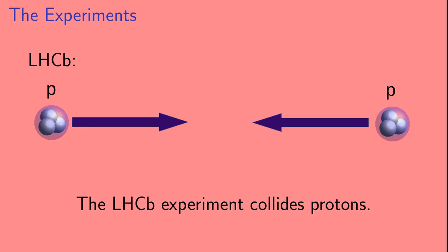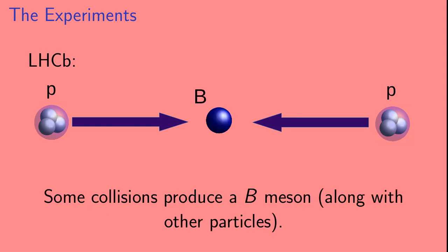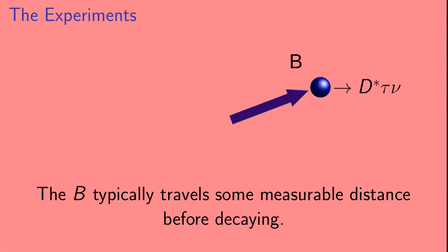So now LHCb. LHCb collides protons. And in some of these collisions, you'll produce a B meson, along with some other particles. The B meson typically travels some measurable distance before decaying. And then LHCb looks for the decay of that B meson going to D star tau nu.